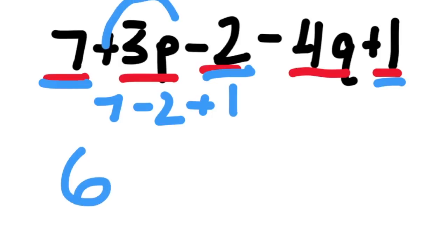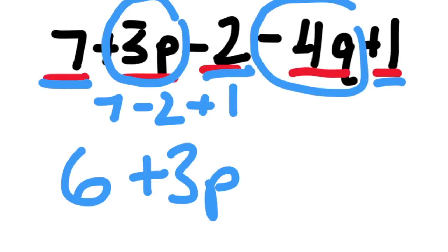All right, the two remaining terms have variables, but they do not have the same variable, so it'll be +3p and then -4q. So the final expression is 6 + 3p - 4q.